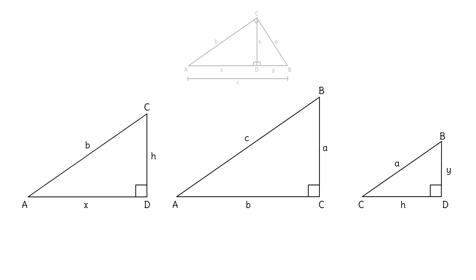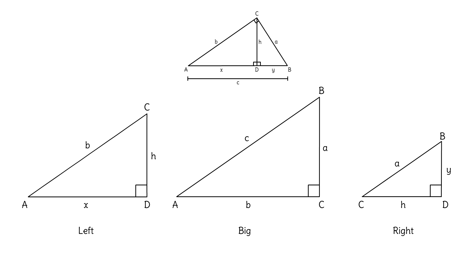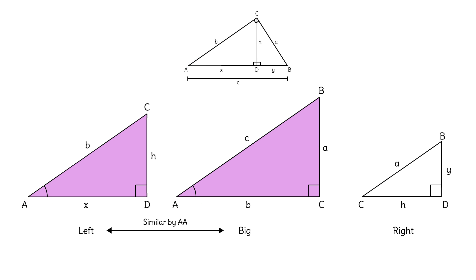To prove triangles are similar here, we'll look for pairs of congruent angles. Let's start with the triangle on the left and the big triangle. They each have a right angle, so that's one pair of congruent angles. Because the two triangles share angle A in the original diagram, these two angles are actually the same angle — that's the reflexive property. So the triangle on the left and the big triangle are similar by the angle-angle similarity postulate.